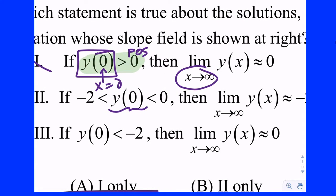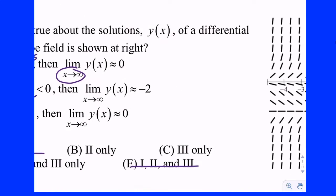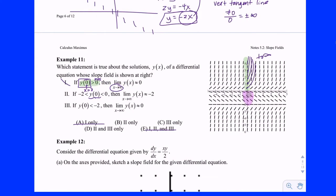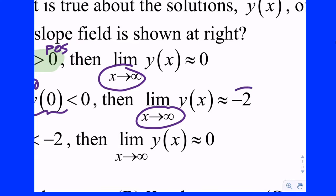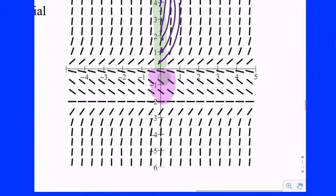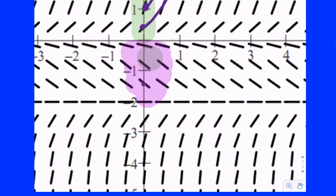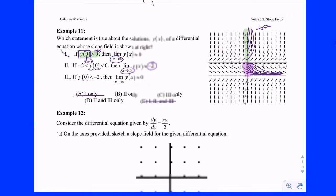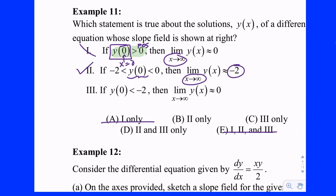Statement 2: if y(0) is between negative two and zero — so you drop in at x equals zero somewhere between y equals negative two and zero. Is it true that as you go out to the right you're getting closer to negative two? Drop in somewhere: it looks like you're getting closer to negative two. Drop in a little higher: still getting closer. Drop in the middle: yes, anywhere you drop in along the y-axis in that y interval, you appear to be approaching negative two. So statement 2 appears to be true — it has to have 2 in it.